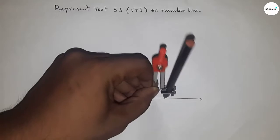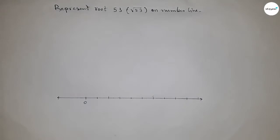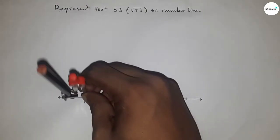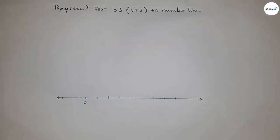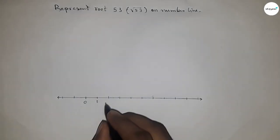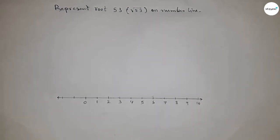Or unit length. You can take any length to mark the number on the line by this way. So this is one, two, three, four, five, six, seven, eight, nine, and so on. And this side minus one, minus two, and so on.